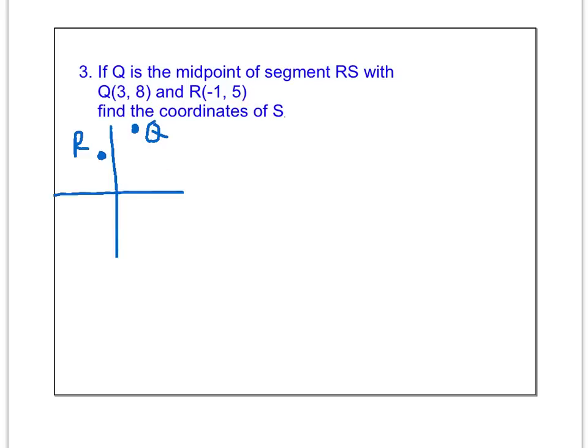R is at negative 1, 5. Q is at 3, 8. This just gives me a kind of a visual, so I can maybe try to guess where I think point S should go. And I'm going to guess it's like right there.